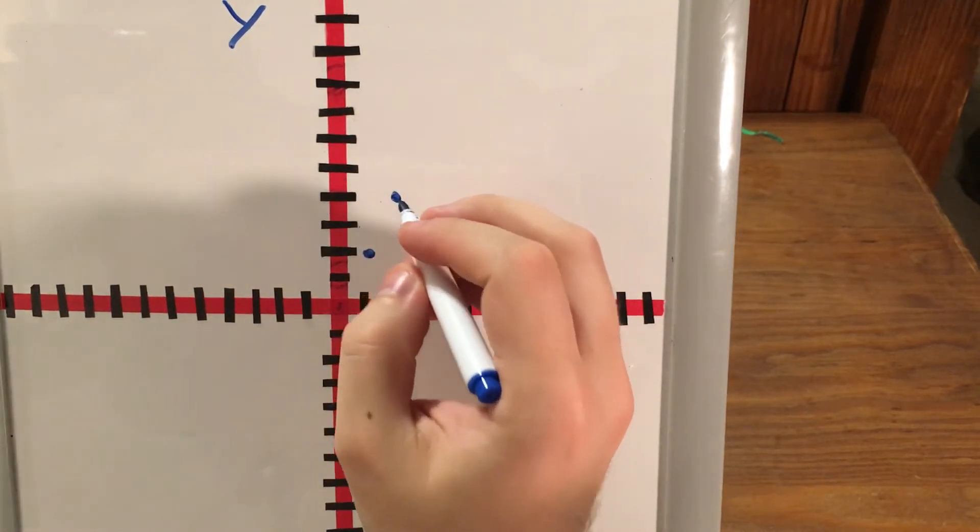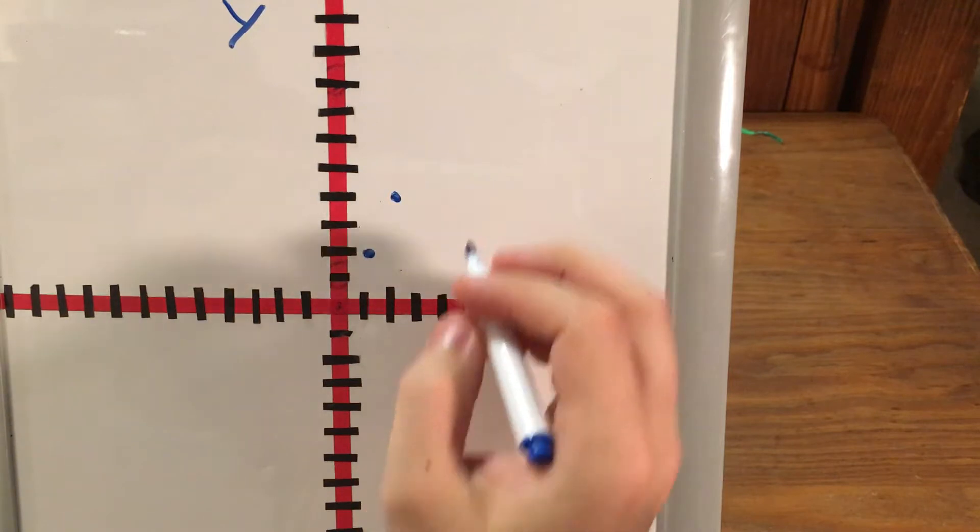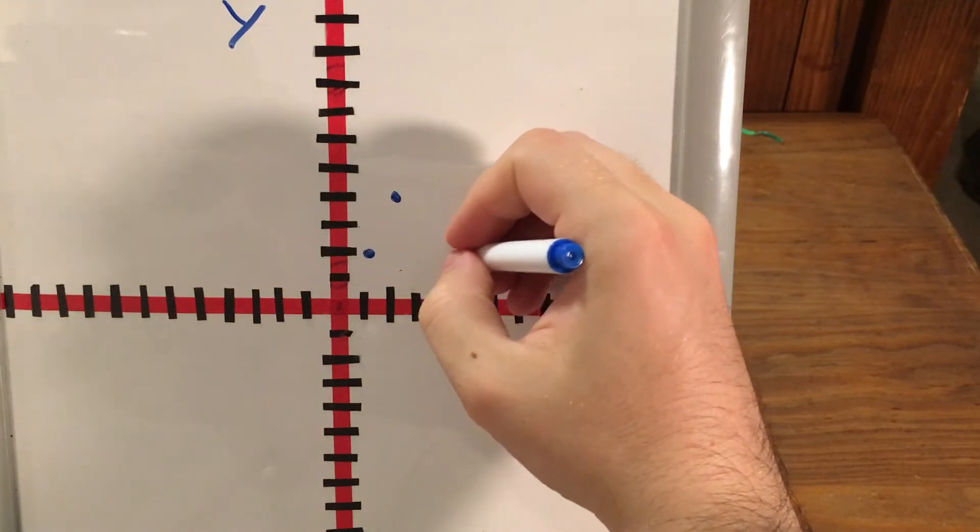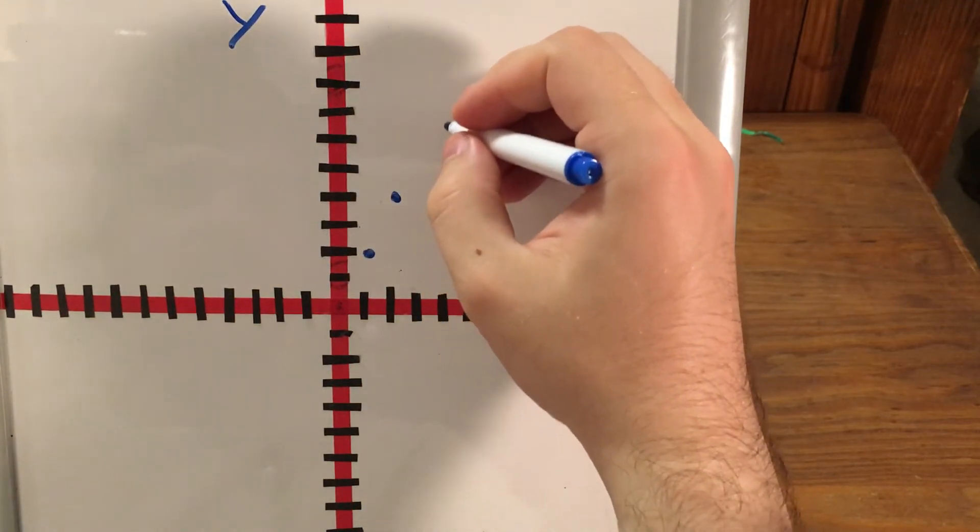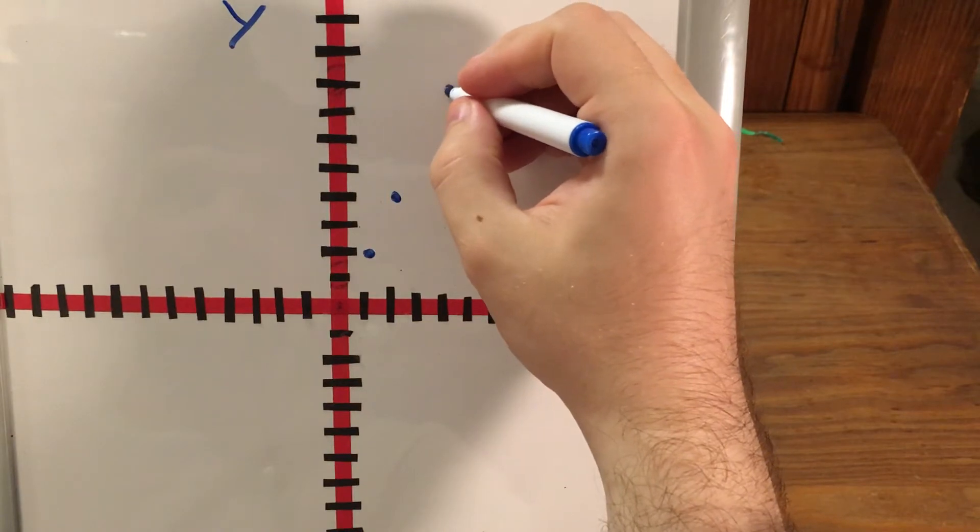x of 4, y of 8. 1, 2, 3, 4, 5, 6, 7, 8 is here.